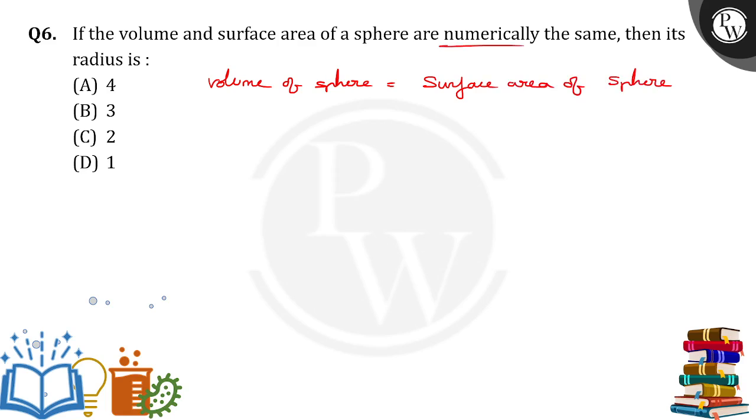So what is the volume of the sphere formula? 4 by 3 pi r cube. What is the surface area of sphere? 4 pi r square.